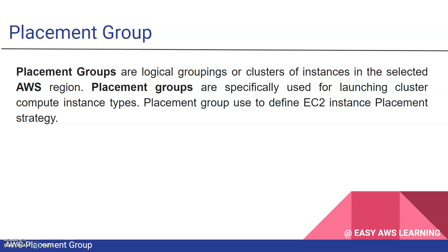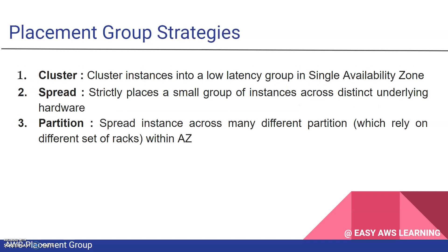There are three types of placement group strategies provided by AWS: cluster, spread, and partition. Cluster packs instances close together inside a single AWS availability zone, which gives low latency and high bandwidth — up to 10 Gbps. That's the key use case for cluster: low latency with high bandwidth within a single availability zone.